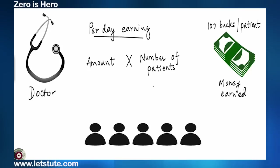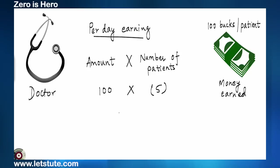If you had five patients, then to know the total earning, you would multiply five and hundred or you would add hundred five times.